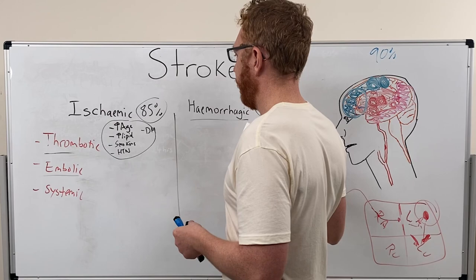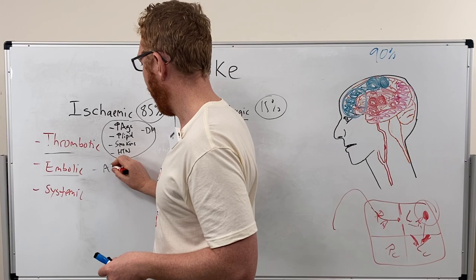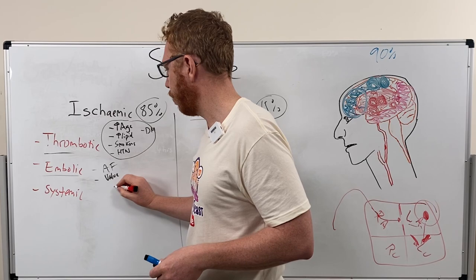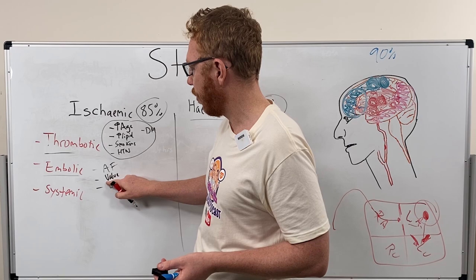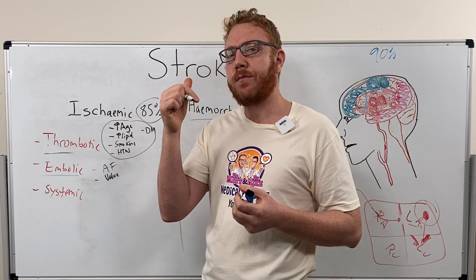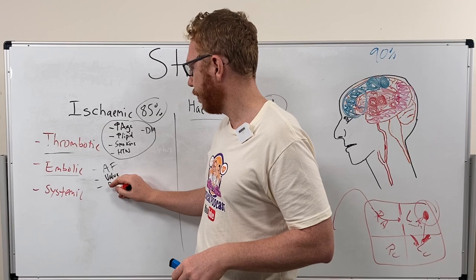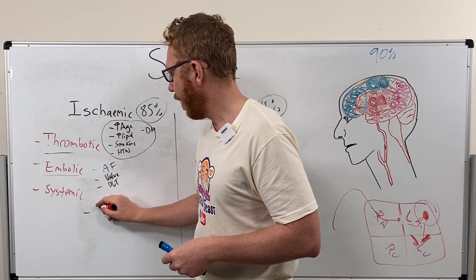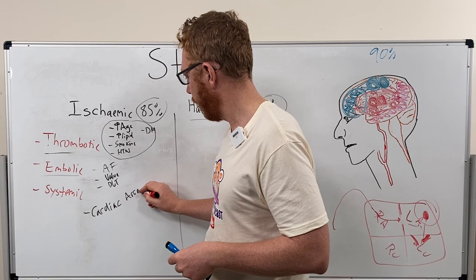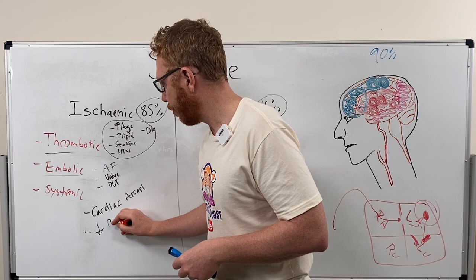For embolic risk factors, we already said atrial fibrillation is a big one, but also valve defects — growths on valves — and other clotting disorders that increase clotting. Anything that can throw off an embolus, such as fat from a fracture, air, cancer, or a thrombus, is a risk factor, as we saw with DVT. For systemic causes, this could be from cardiac arrest post-MI, or decreased blood pressure — hypotension — from shock or dehydration.